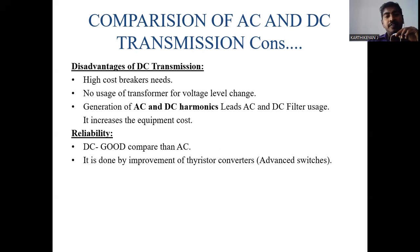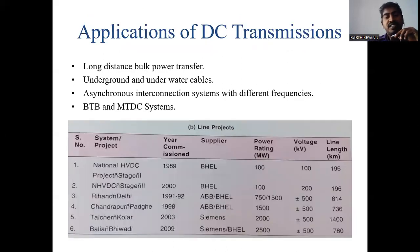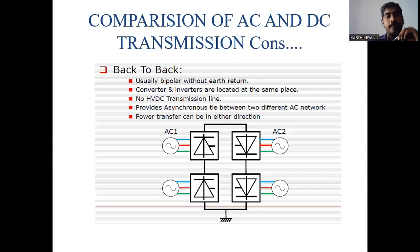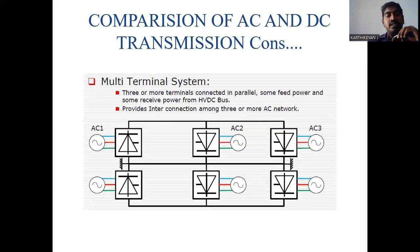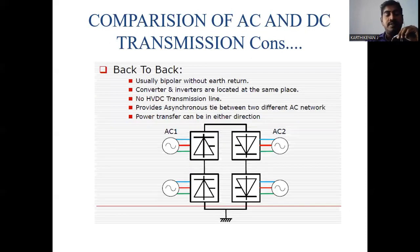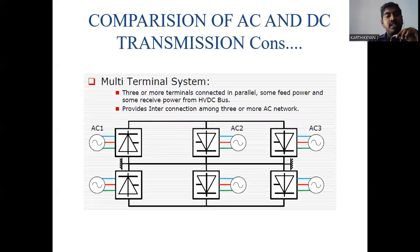The lifespan of the system can be further improved by using thyristor converters. Among the applications of HVDC systems, several projects from 1989 up to 2018 show that both the line length and power rating have significantly increased in DC transmission systems compared to AC. The types of HVDC transmission systems include back-to-back (bipolar) HVDC and multi-terminal systems. In a bipolar system, two converters are connected back to back; in a multi-terminal system, converters are connected in parallel where some feed power in and some receive power from the HVDC system.